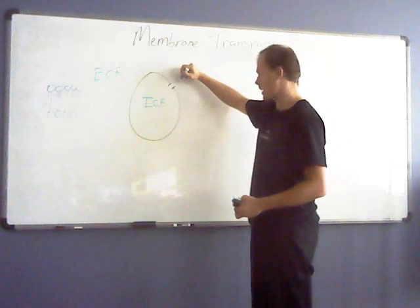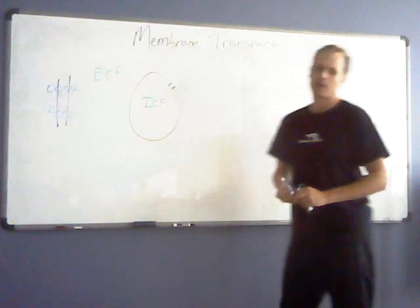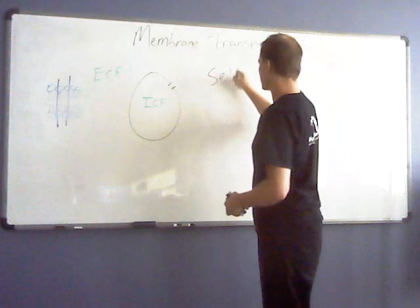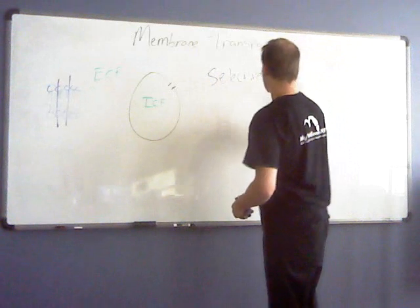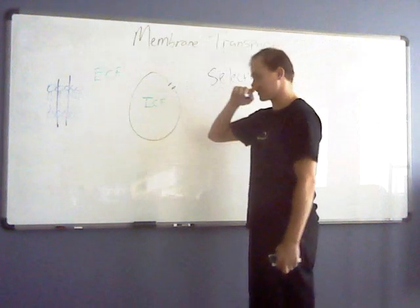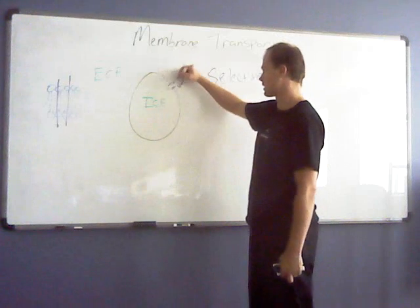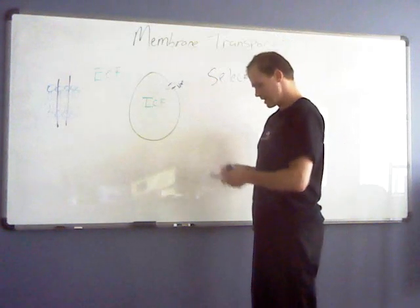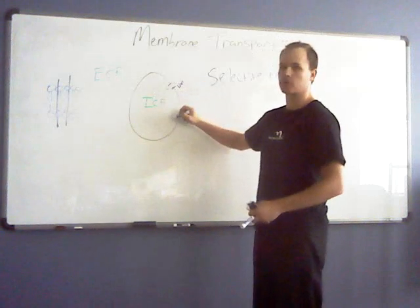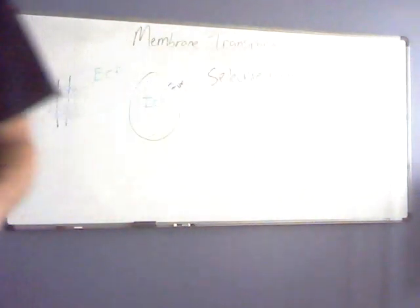That's how cells are permeable to substances — and we use the term selective permeability. The gates found within cell membranes are very specific. For example, a sodium gate is only going to allow the transport of sodium into or out of the cell. A potassium gate is only going to allow the transfer of potassium into or out of the cell. Sodium will not move through a potassium gate and vice versa. That's what we mean by selective permeability.